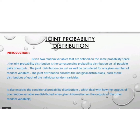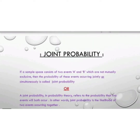The topic is on joint probability distribution. Given two random variables that are defined on the same probability space, the joint probability distribution is the corresponding probability distribution on all possible pairs of outputs. The joint distribution can be considered from any given number of random variables. It encodes the marginal distributions of each individual random variable, as well as the conditional probability distributions, which deal with how the outputs of one random variable are distributed when given information on the outputs of the other random variable.